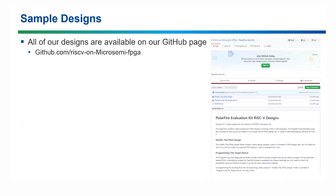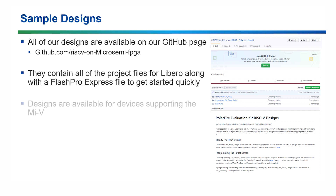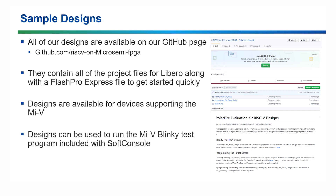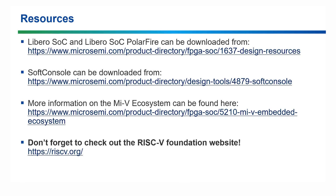We also have several sample designs available on our GitHub page. They contain all of the project files for Libero and a FlashPro Express file which allows you to program your board without having to open the project. Designs are available for all of the devices that support the Mi5, and can be used to run the Mi5 Blinky test program which is included with SoftConsole. Here are some helpful links for the different tools you might need to download to get started, including Libero SoC, SoftConsole, and some information on the Mi5 ecosystem. Don't forget to check out the RISC-V Foundation website at www.riscv.org.